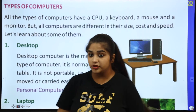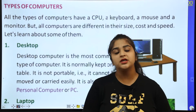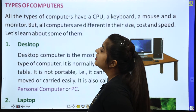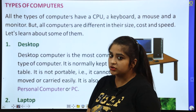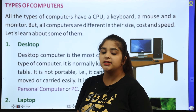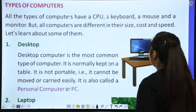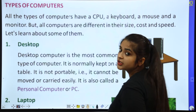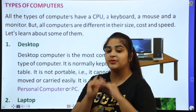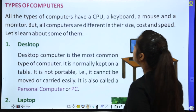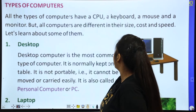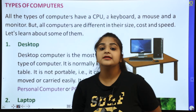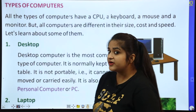Types of computers — now we will study different types. All types of computers have a CPU, that is Central Processing Unit, a keyboard, a mouse, and a monitor. A monitor means the screen which we see. But all computers are different in their size, cost, and speed.